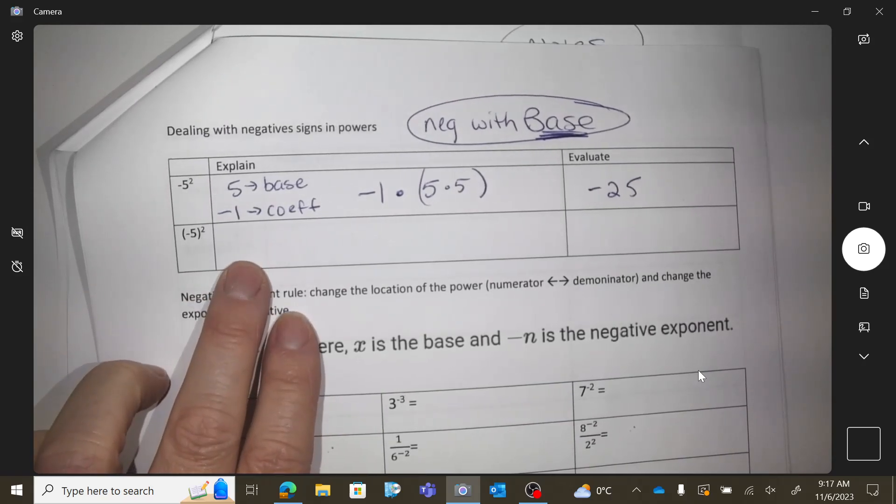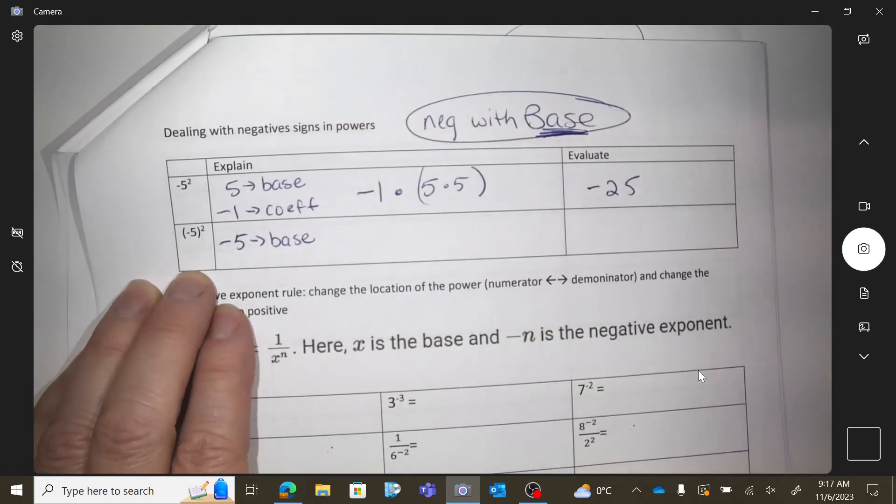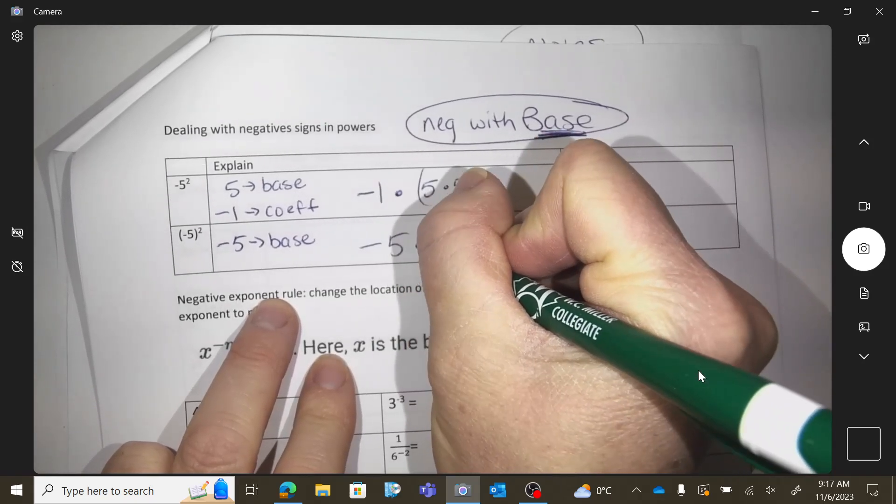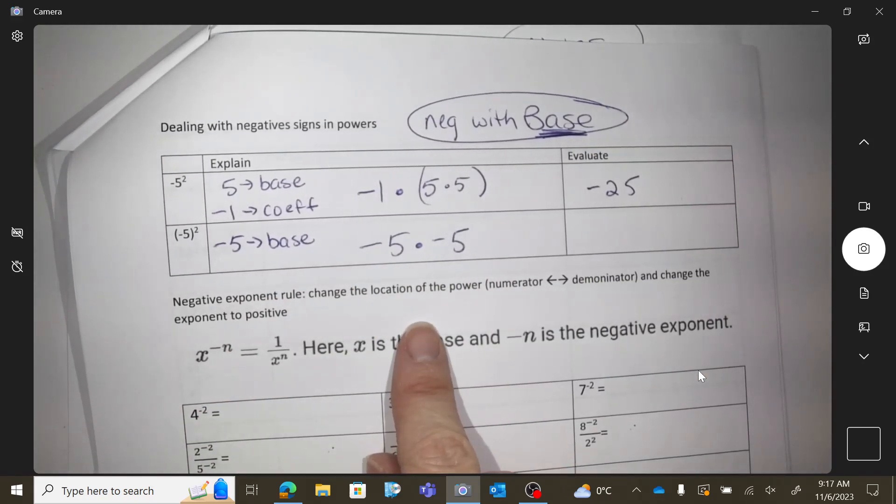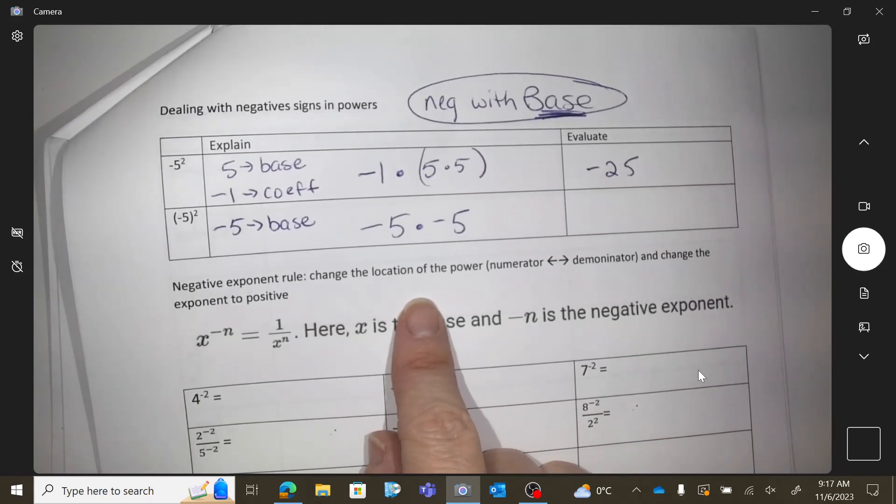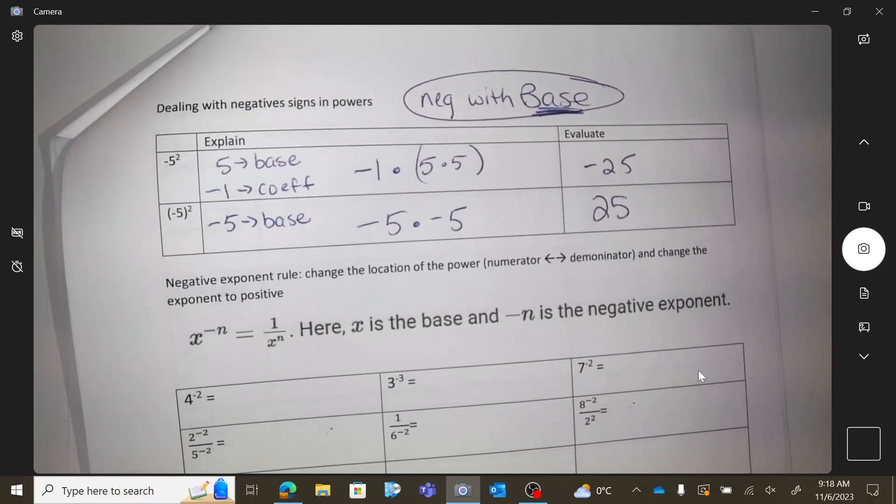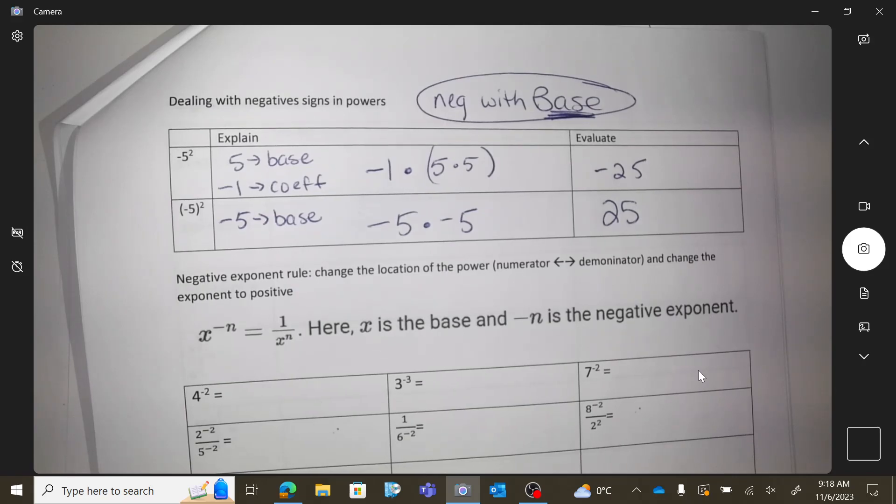This question is different, because now negative 5 is the base. There is no coefficient. So do you see how that's different? Almost looks the same, but different. So this question would look like this, which would be a positive 25. Okay, so that's when you're dealing with negatives in a base.